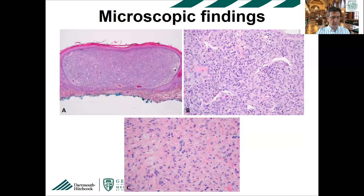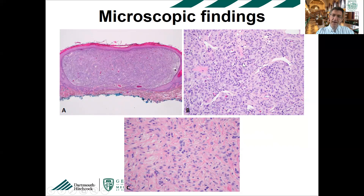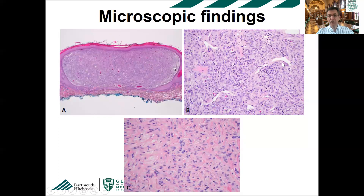Recent data show a distinct immunohistochemical and genetic profile supporting that epithelioid fibrous histiocytoma is actually a distinct neoplasm. Microscopically, it usually has an epidermal collarette. Unlike typical benign fibrous histiocytoma/dermatofibroma, it has bland epithelioid cells with abundant pale eosinophilic cytoplasm, vesicular nuclei, and small nucleoli with no pleomorphism, no atypical mitoses, and no necrosis. You can see perivascular accentuation and interspersed multinucleated giant cells, with low mitotic activity and a fibro-histiocytic look.